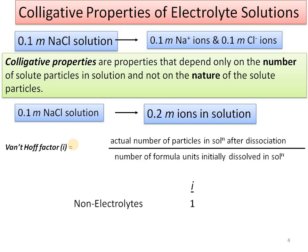For non-electrolytes, molecules before and after dissociation are the same — for example urea, which exists as molecules and does not give different ions, so i = 1. For NaCl it is 2. For CaCl₂, it gives 3 ions: 1 Ca²⁺ and 2 Cl⁻, so i = 3. Similarly MgCl₂ gives i = 3. If a molecule is 100% dissociated, i = 1 for non-electrolyte, 2 for NaCl, and 3 for CaCl₂.